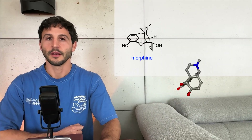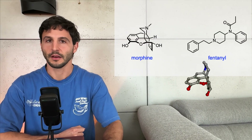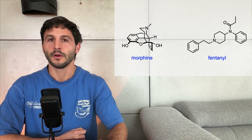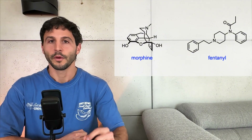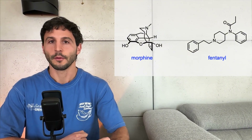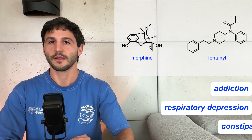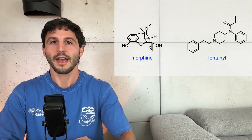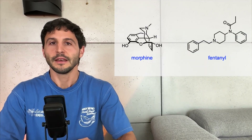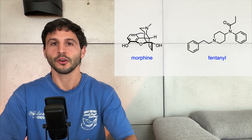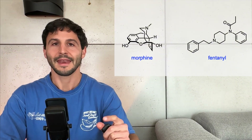Opioids are some of the most effective drugs for treating both acute and chronic pain. They include natural compounds like morphine and synthetic ones such as fentanyl. But as powerful as they are, opioids come with some serious downsides — things like addiction, respiratory depression, and constipation. These side effects often limit how much and how often doctors can use them safely.